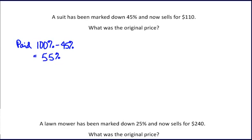Let's solve this by using a proportion. Since we know that we paid 55%, let's put the 55 over 100. It sells for $110, which corresponds to the 55, and we want to know what the original price was.